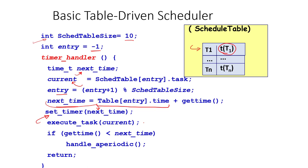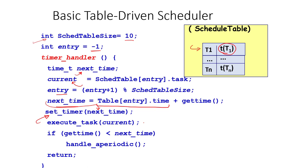A schedule table might look like this: task 1 executes from 0 to 100, task 2 from 101 to 150, task 3 from 151 to 225, then the second instance of t2, then the second instance of t1, and finally the table repeats. This is called the major cycle.